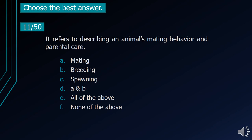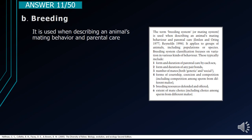Number 11. It refers to describing an animal's mating behavior and parental care. A. Mating. B. Breeding. C. Spawning. D. A and B. E. All of the above. F. None of the above. The correct answer is letter B, Breeding. It is used when describing an animal's mating behavior and parental behavior.